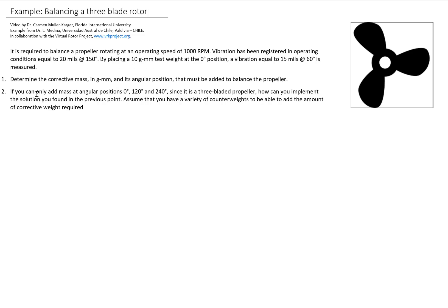However, the mass can only be placed at the propeller at 0, 120, or 240 degrees because it is a three-blade propeller. How can we implement the solution we found in the previous point? Assume that you have a variety of counterweights to be able to add the amount of corrected weight required.